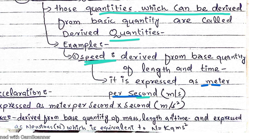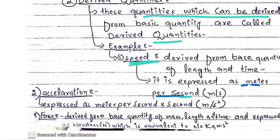Another example is acceleration. Acceleration is expressed as meter per second per second, which is meter per second squared. The meter comes from length and per second squared comes from time. So acceleration is also a derived quantity, derived from the basic quantities length and time.